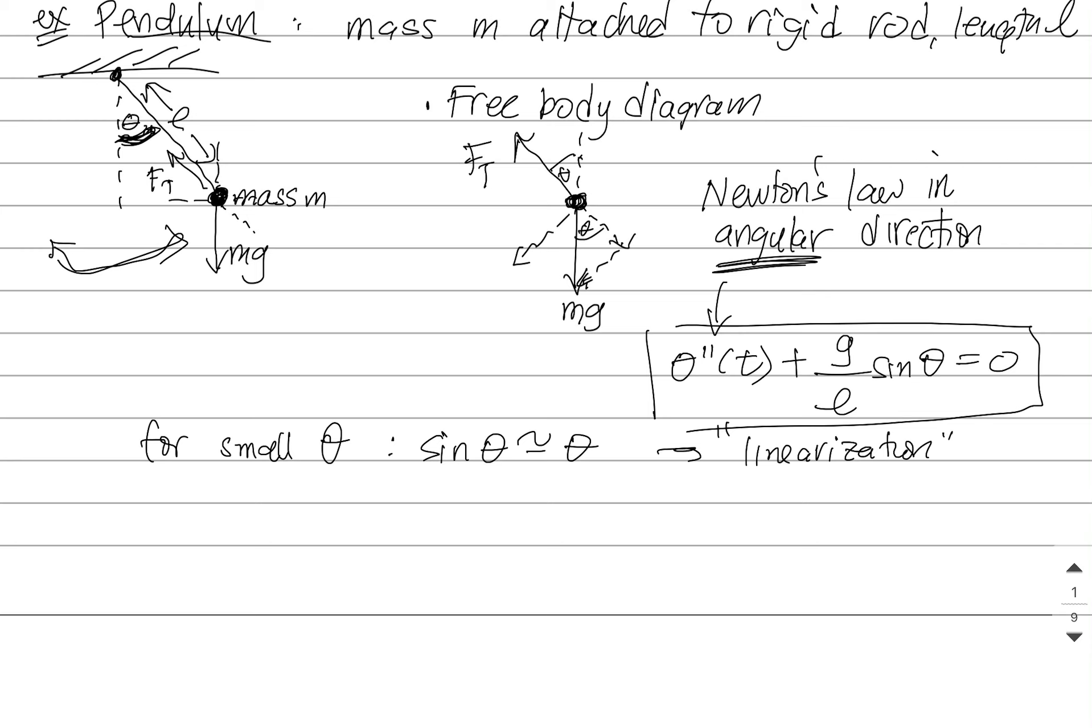Now you can write this as a system, and you can do the same trick that we've always done. You can say let u equal theta prime, and that means u prime would be theta double prime, would be negative g over l sine theta.